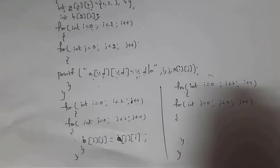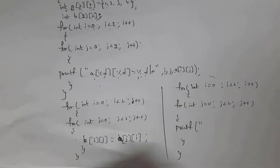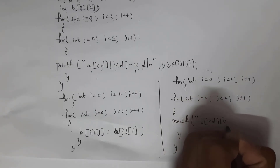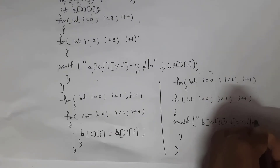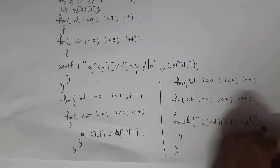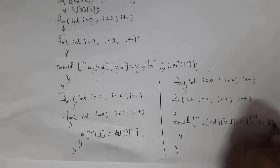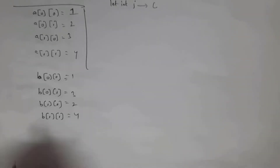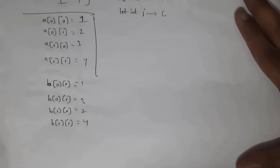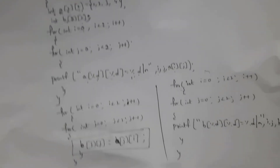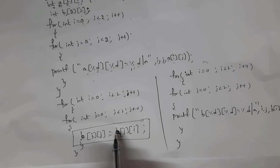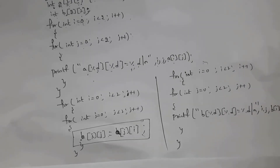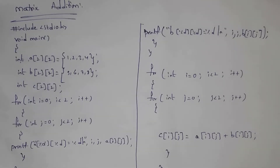To print the transpose output, I written two more for loops. Inside this I written printf: b[%d][%d] = %d\n, passing i, j, and b[i][j]. By writing this entire code I get the output for transpose of a matrix. Remember the key formula: b[i][j] = a[j][i] — this is the formula to find the transpose of a matrix.